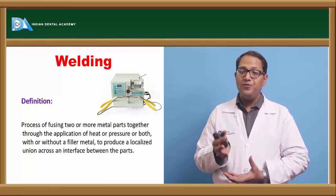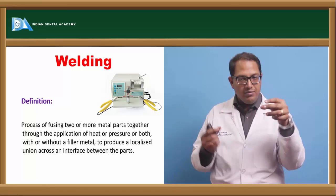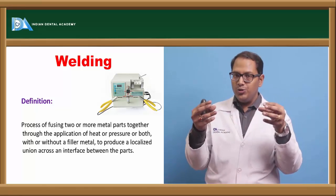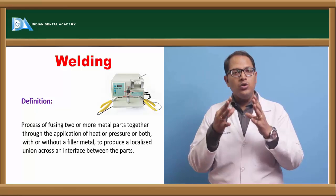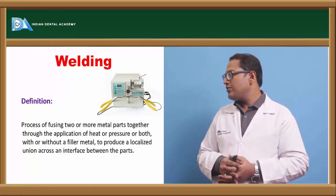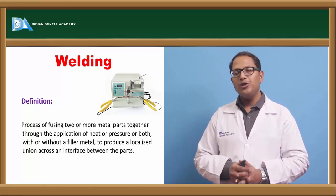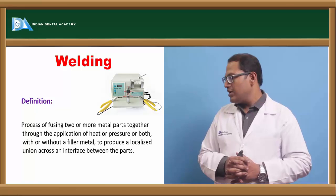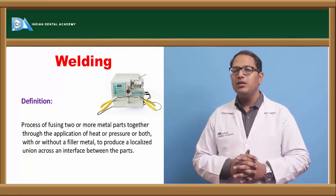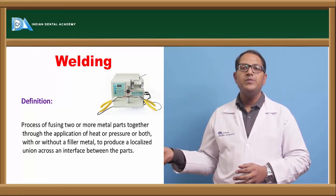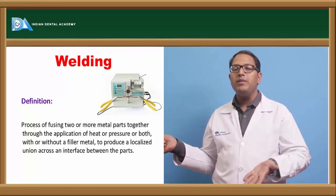Now coming to the difference between soldering and welding. In soldering what we did, we used another material in between two different materials. Two different materials were used to fix. In welding, no different material is used to fix. Process of fusing two or more metal parts together through the application of heat or pressure between them with or without a filler metal or to produce a localized union across an interface between two parts. Basically there is no third metal, no different metal to say.